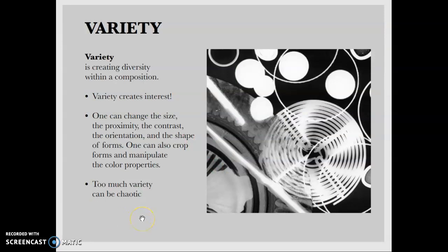Let's move on to variety, which is creating diversity within a composition. Variety can be achieved in countless ways by changing the sizes, the proximity, how close things are, contrast, variety and contrast, orientation, how things are positioned or rotated, and the shapes a form creates using variety. One can also crop forms and manipulate the color properties. As too much harmony can be boring, too much variety can be chaotic and feel unstable. So it's good to have a mix of some variety and some harmony so that you get something that is both interesting to look at and also pleasing to the eye.